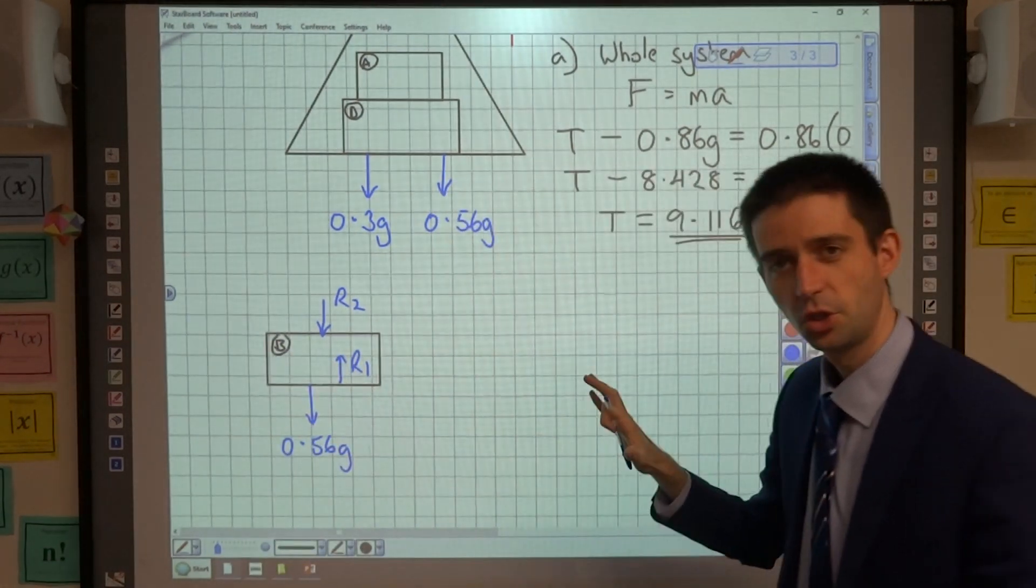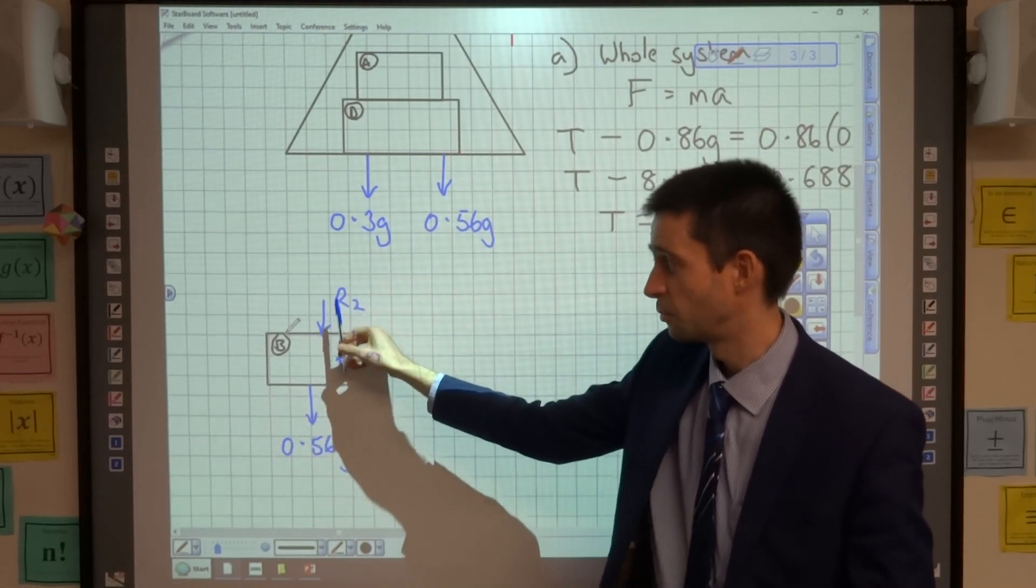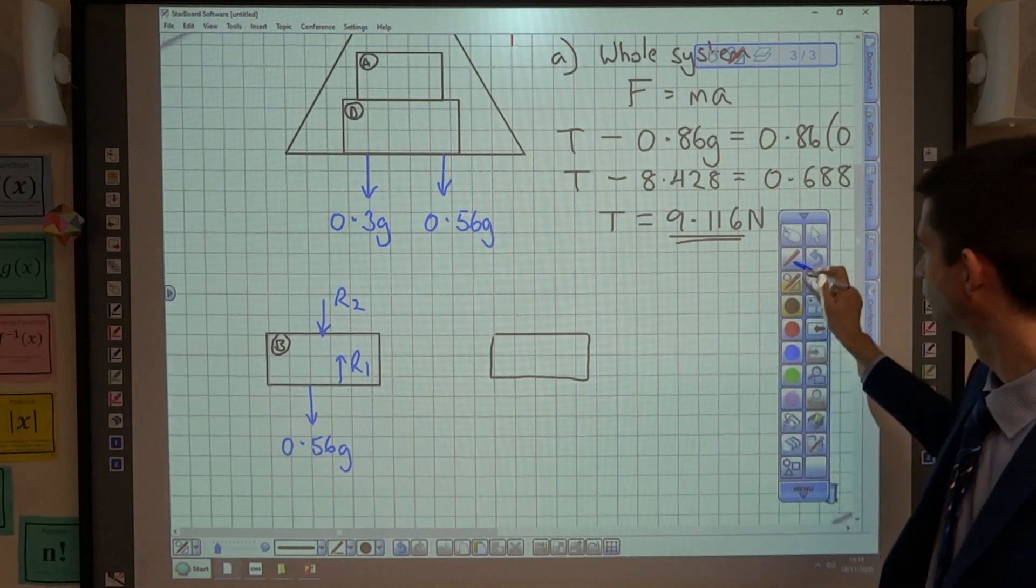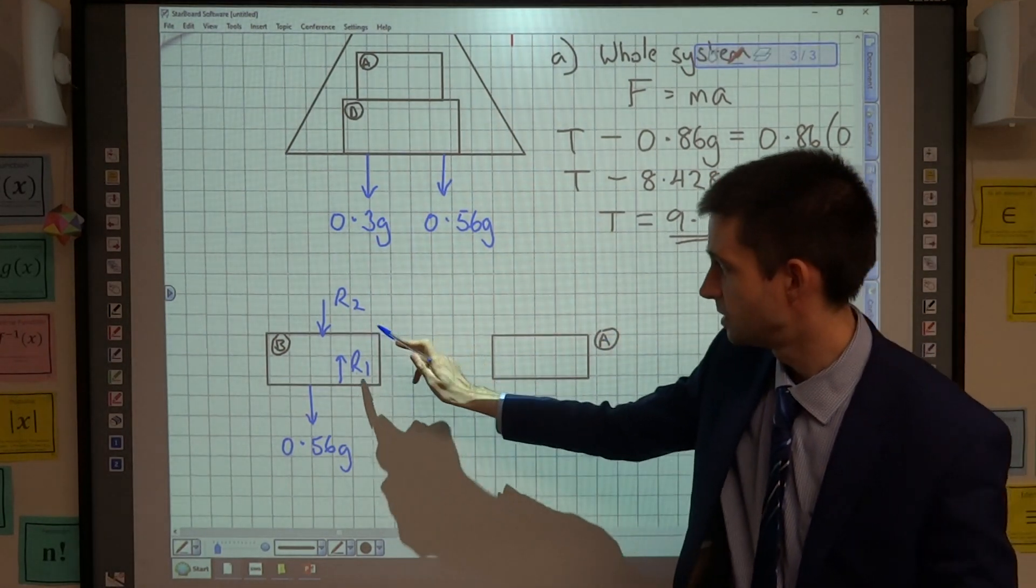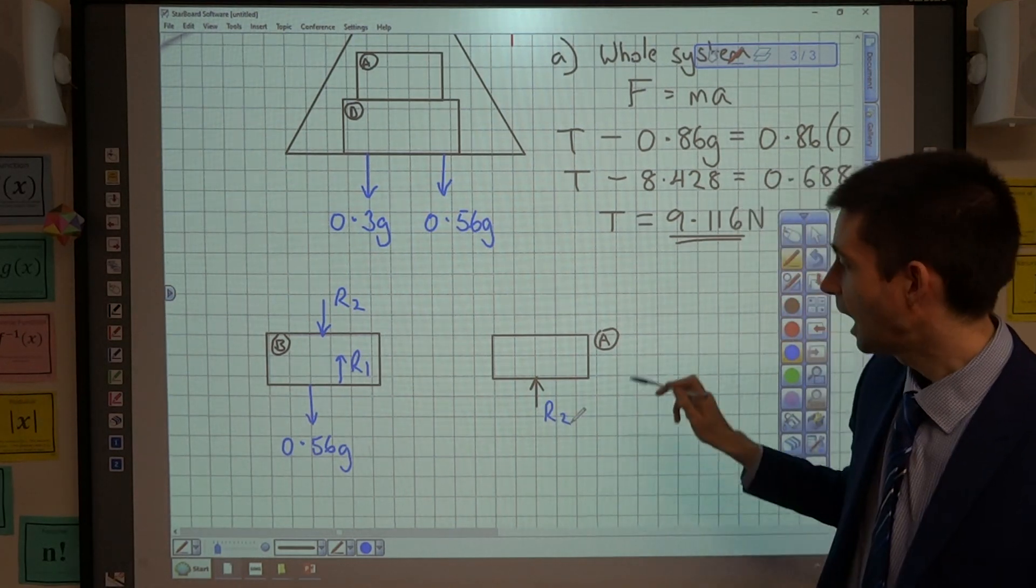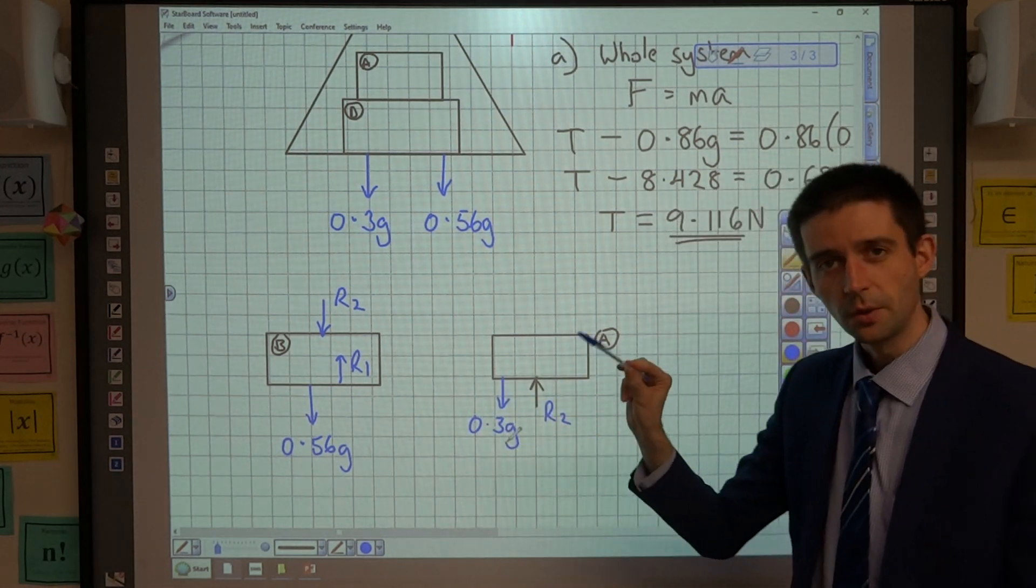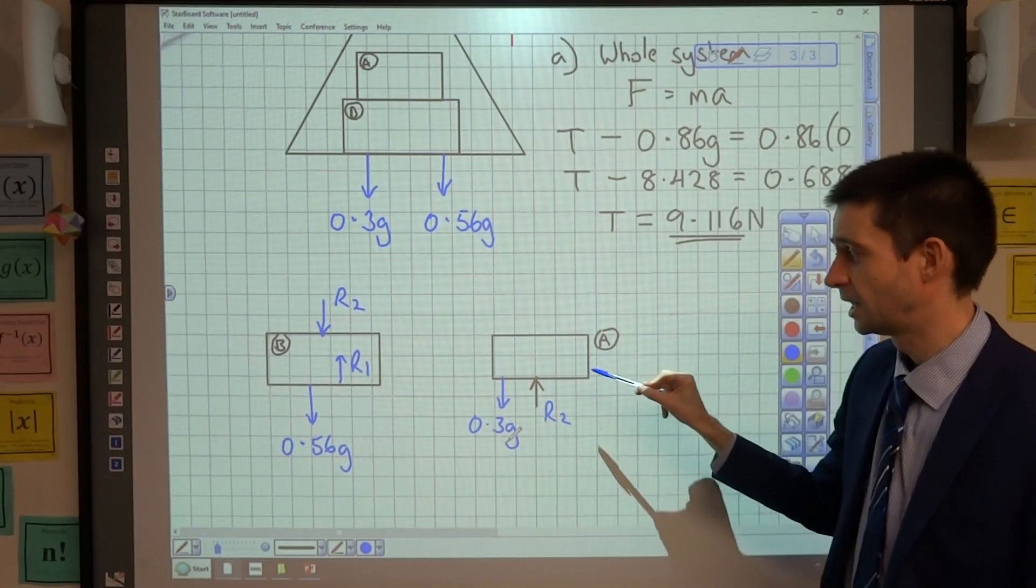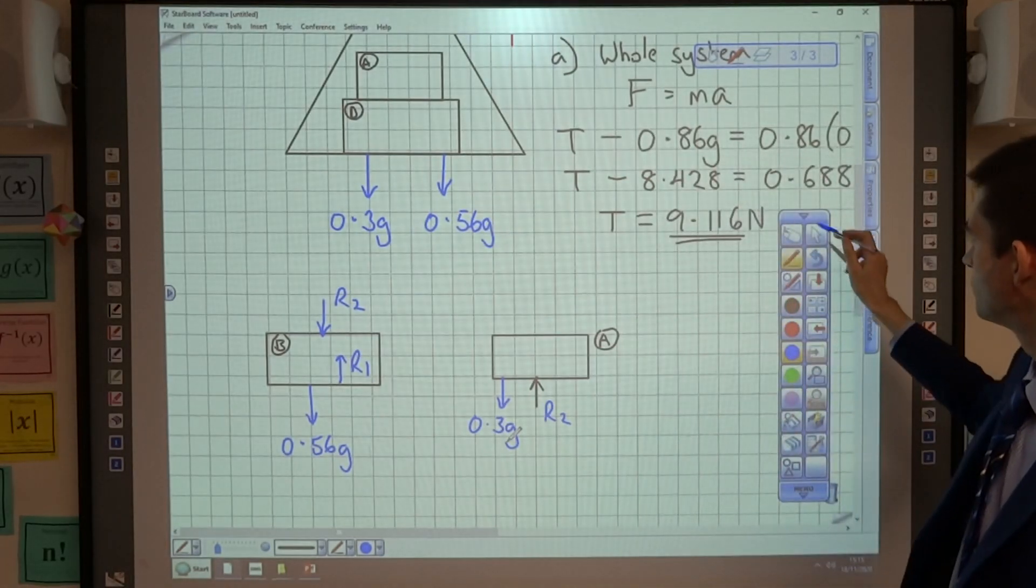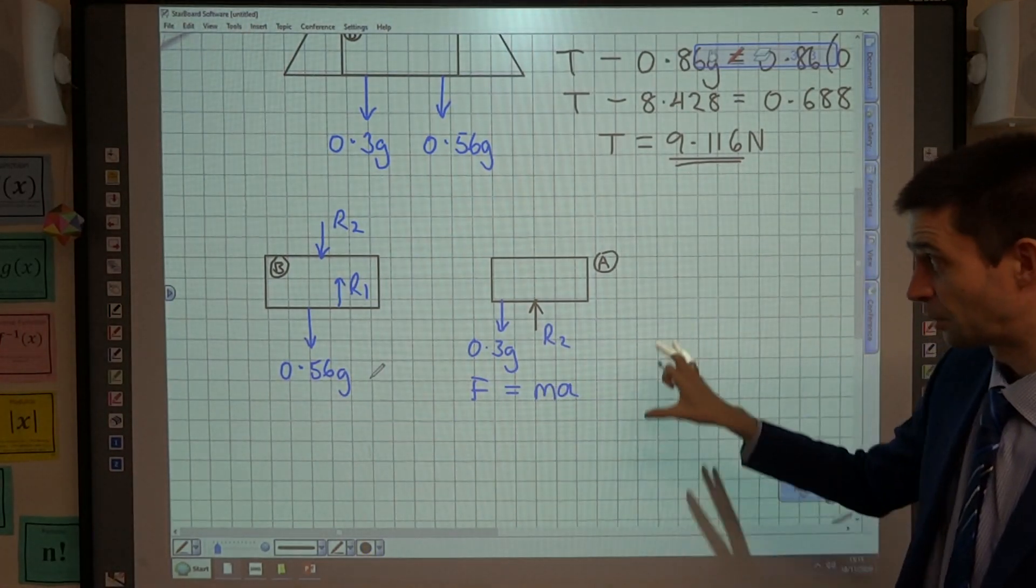Now, the issue I've got here is I've got two unknowns. But this force here that A is exerting on B, there is going to be an equal and opposite reaction force that B exerts on A. So if I consider particle A, I have this force here equal and opposite, which I've called reaction 2. And the only other force I need to consider on A is its weight, which is 0.3 g. So even though I'm asked for the force exerted on B, the way that I'm going to calculate it is by considering the force exerted on A, because A will exert an equal and opposite reaction force on B.